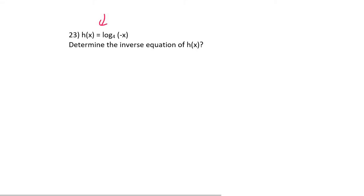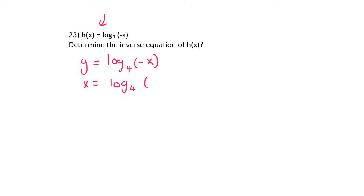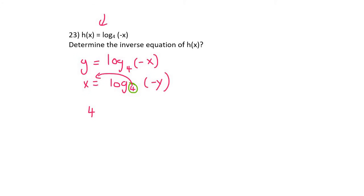For the inverse of y = log₄(−x): write it with y, switch x and y, then reverse the log to get y alone. The base 4 to the power of the other side equals −y. Divide by −1, and we end up with the final answer.